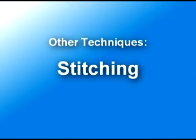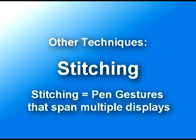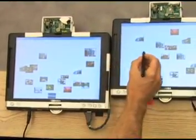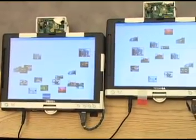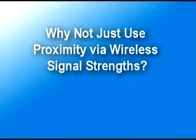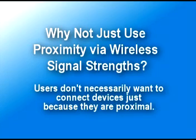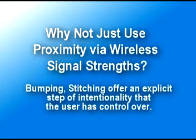In ongoing research, we are exploring other techniques to connect and configure multiple devices. For example, another approach appropriate for tablet PCs is to use the tablet's pen to make a gesture that spans multiple displays — we call this stitching. Stitching allows the user to intuitively copy an icon to a remote machine that is nearby. Of course, wireless signal strengths can be used to sense proximity, but just because two devices are proximal to one another, it does not necessarily mean that users want to connect them.